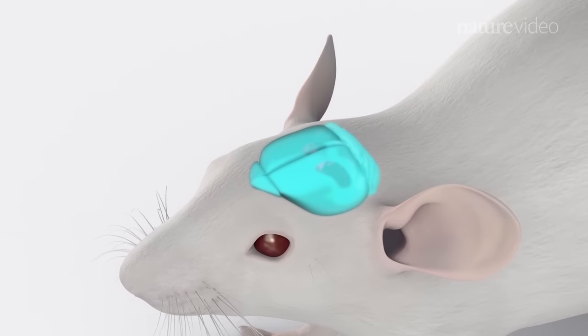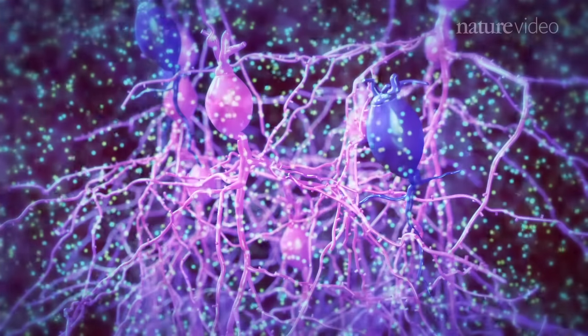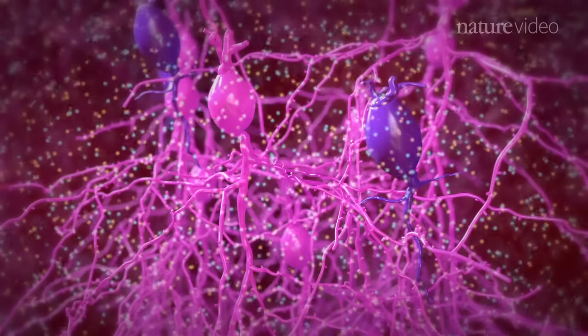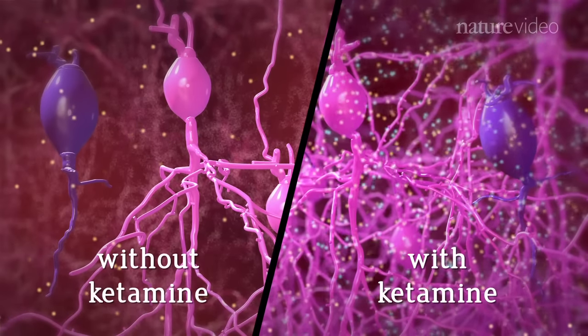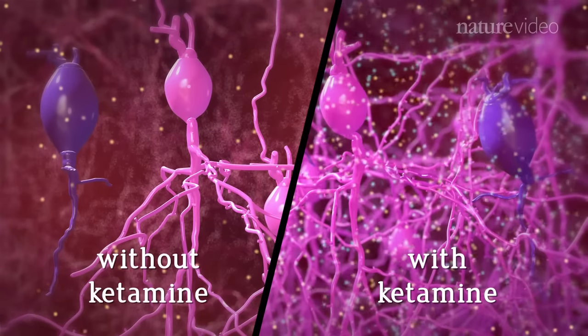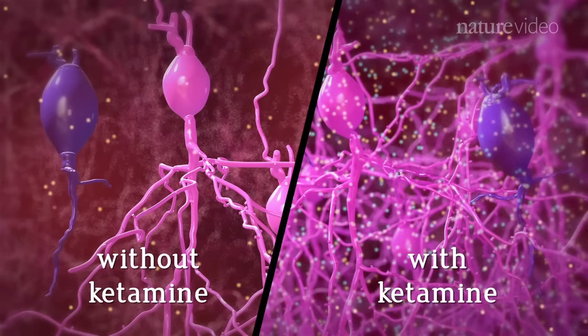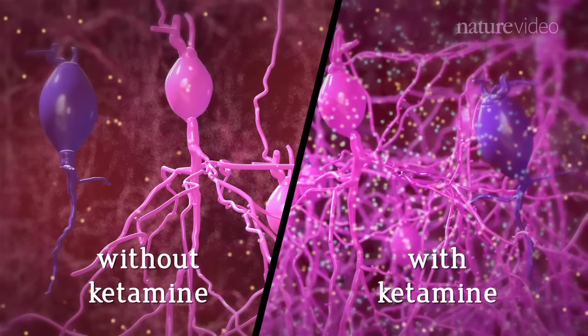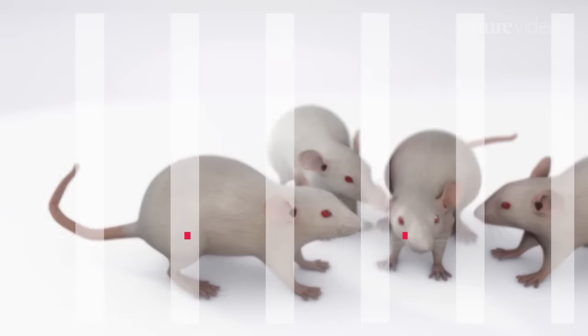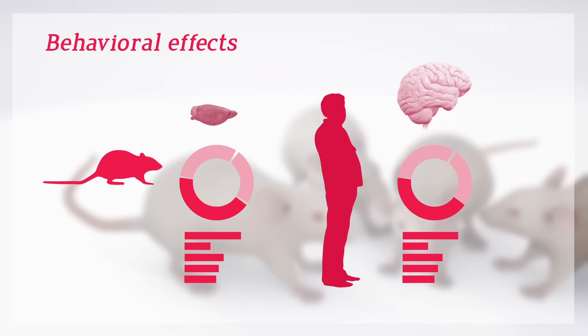The mechanism behind this is an area of active research. Ketamine blocks a type of synaptic transmission, leading to activation of a number of signaling pathways and increasing neurotrophin expression. These molecular changes result in increased plasticity in the prefrontal cortex and hippocampus, and likely contribute to ketamine's behavioral effects.